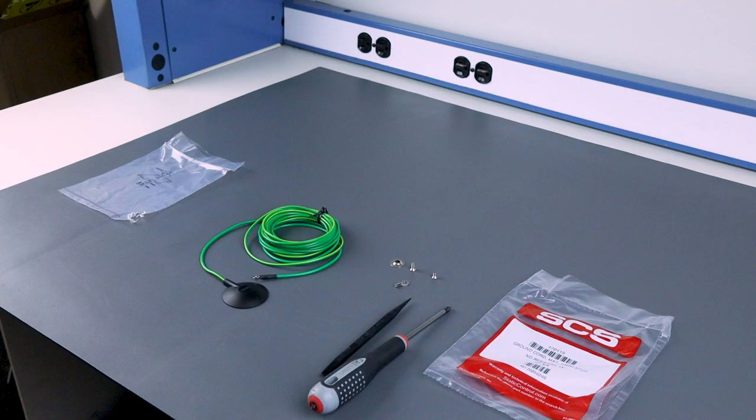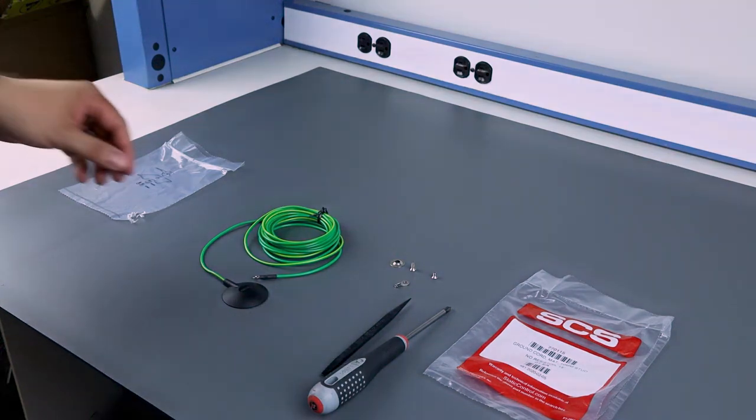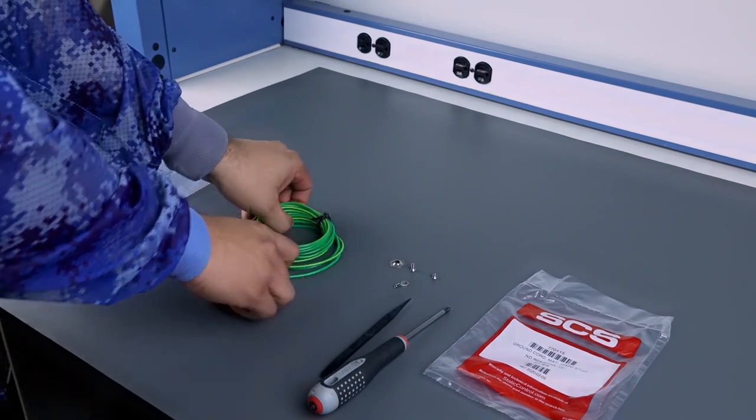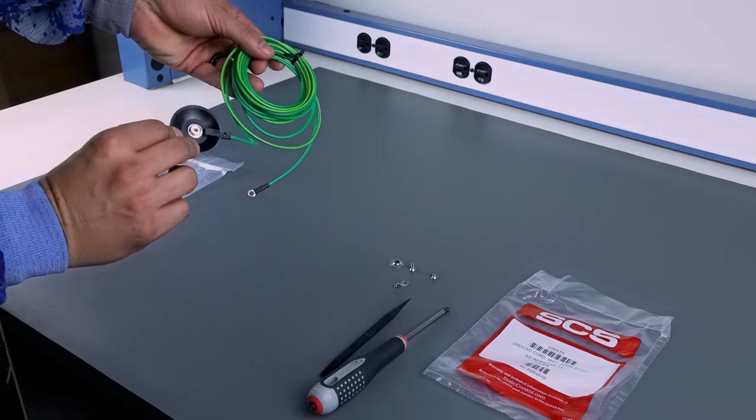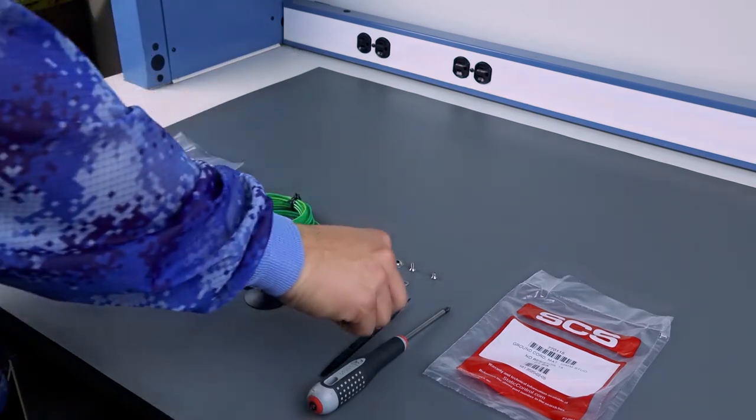Today we're going to be installing the SCS770115 ground cord mat kit. It has the green cord and the dome style snap with no resistor in it.